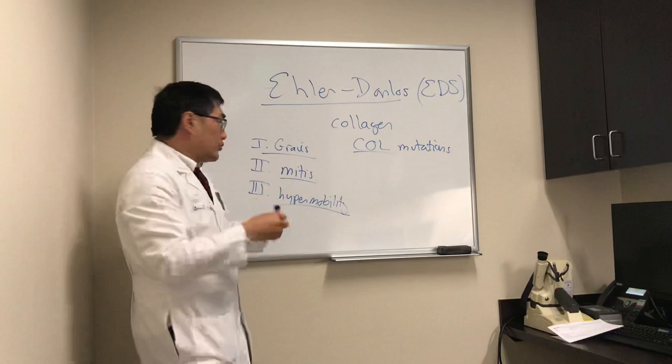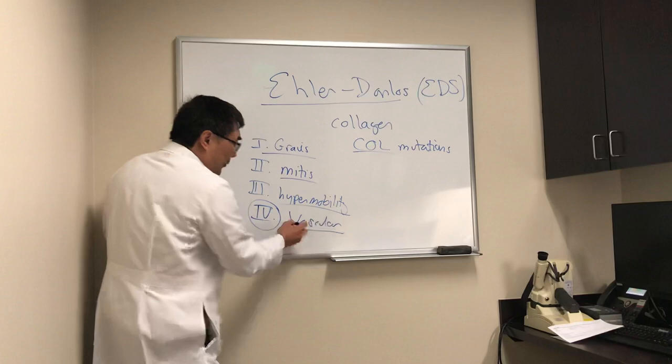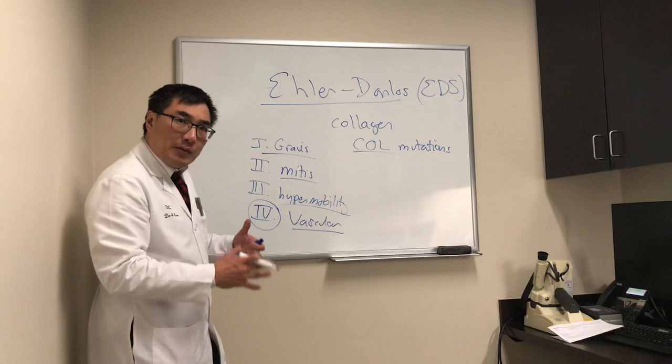Type 4 is the one we really are afraid of — the vascular form. The vascular form produces arterial dissections, aneurysms, and non-traumatic carotid cavernous fistulas because the arterial wall is weak. It can present to us as Horner syndrome, cranial nerve palsies, or a carotid cavernous fistula.